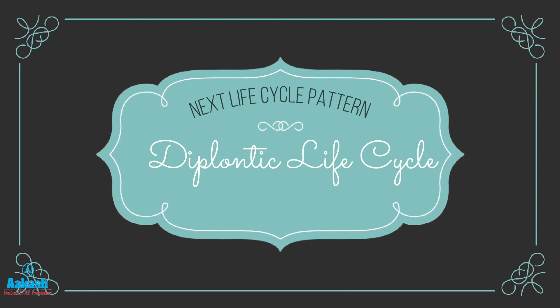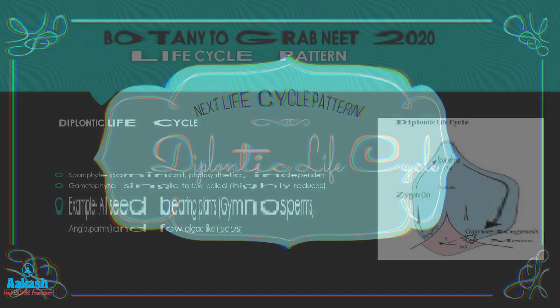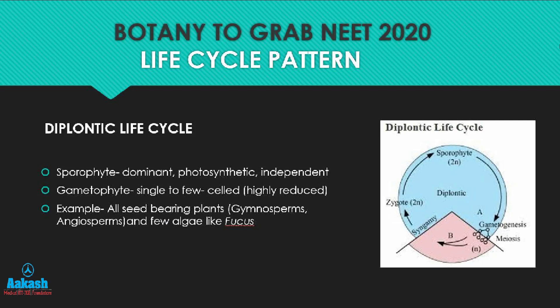In the diplontic life cycle, the sporophyte is the dominant, photosynthetic, and independent phase. In Fucus, a diploid gamete mother cell undergoes meiosis forming gametes — this is gametic meiosis. In seed-bearing plants — gymnosperms and angiosperms — we see sporic meiosis, that is meiosis in the spore mother cell for spore formation. These spores produce gametophytes that can be single to few-celled but are always highly reduced in cell number. This type of life cycle is called the diplontic life cycle.